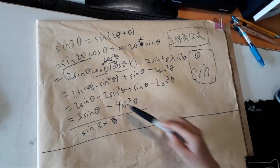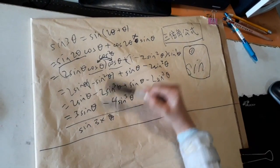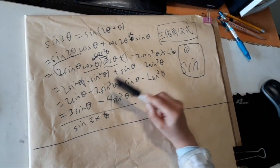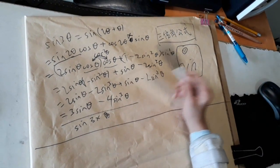So now the next step is to simplify things. We have 2 sine theta times cosine theta, so multiplying the cosines together gives you cosine squared theta, right?